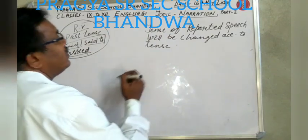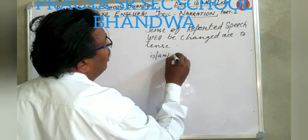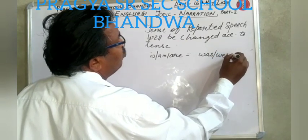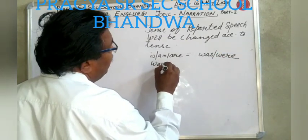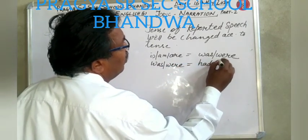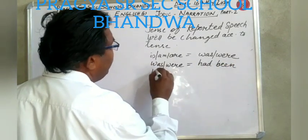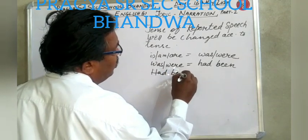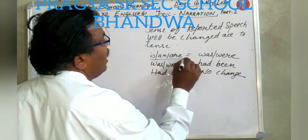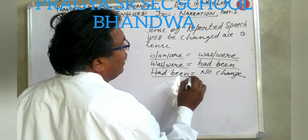According to tense means: am/is/are will be changed into was/were. Was/were will be changed into had been. And had been — no change.